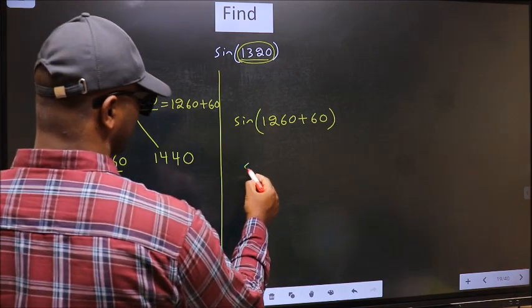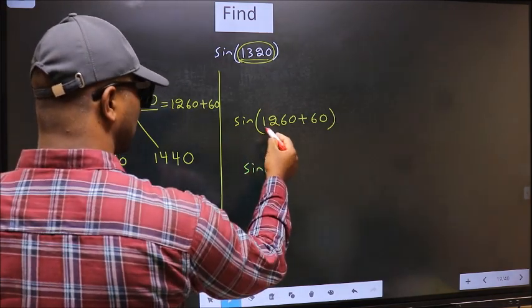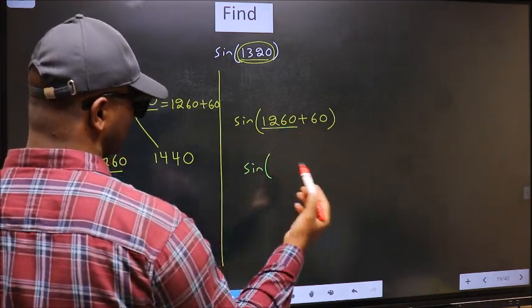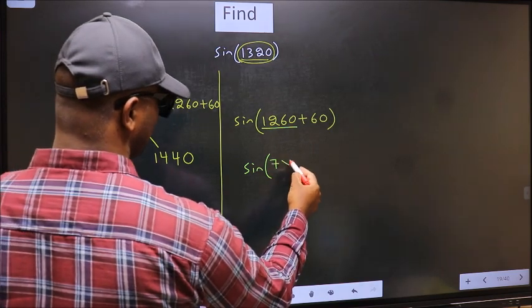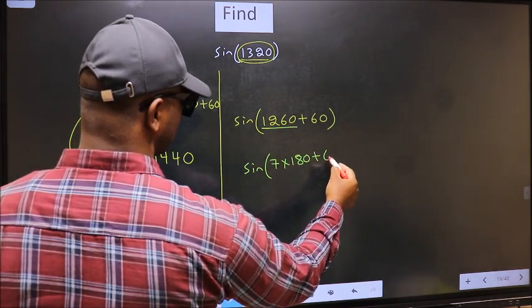Sine. In place of 1260, now we should write 7 times 180 plus 60.